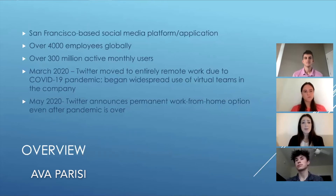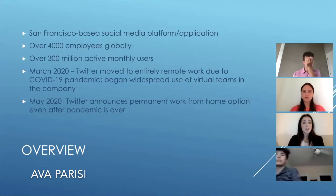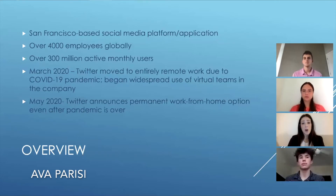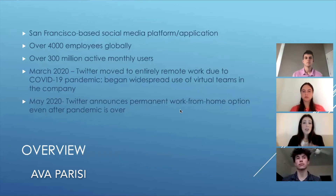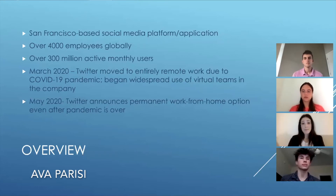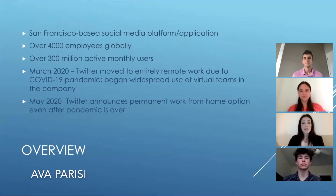In March 2020, COVID-19 was really the catalyst for Twitter's transition. Twitter announced in March that they were moving entirely to remote work due to the pandemic, which began the widespread use of virtual teams in the company. They ultimately saw that it was successful — whether or not they expected it to be, it was working. So in May 2020, they announced they would offer a permanent work-from-home option even after the pandemic is over.